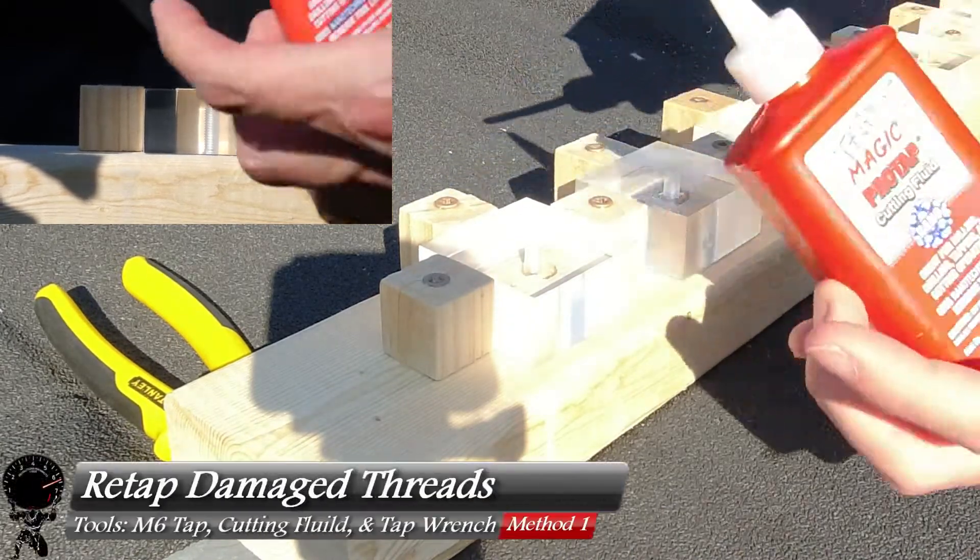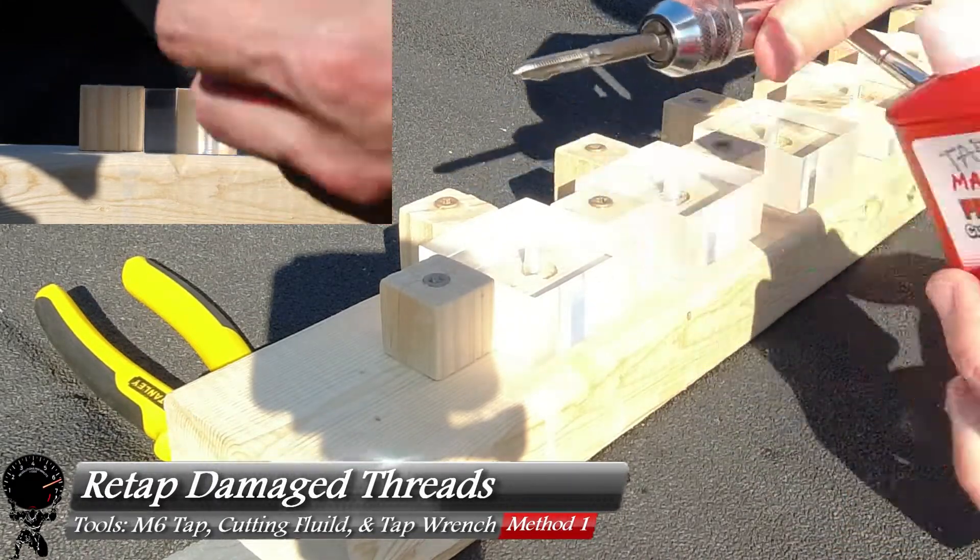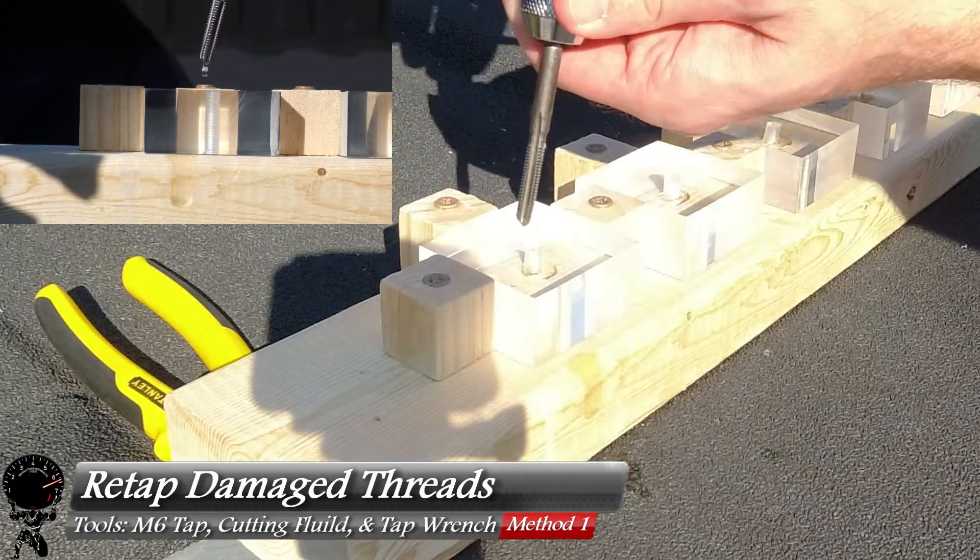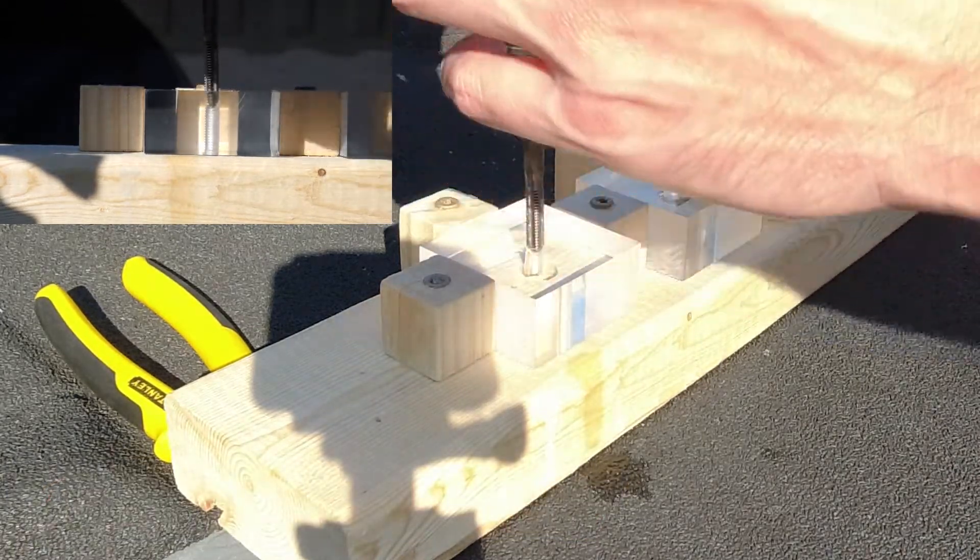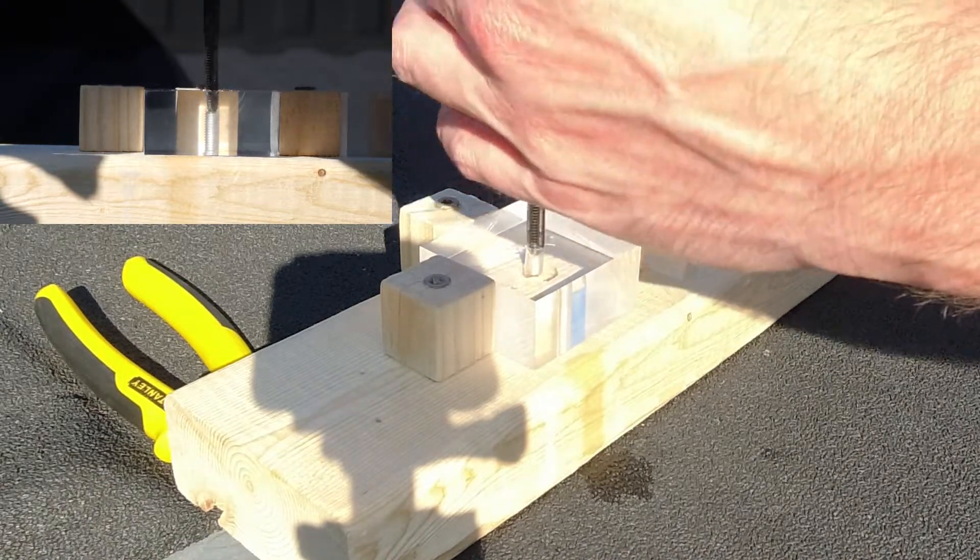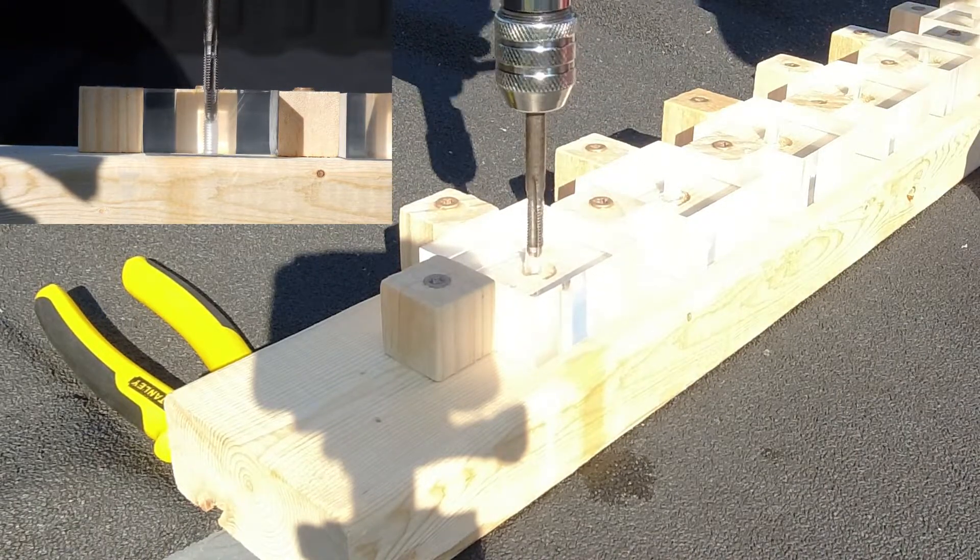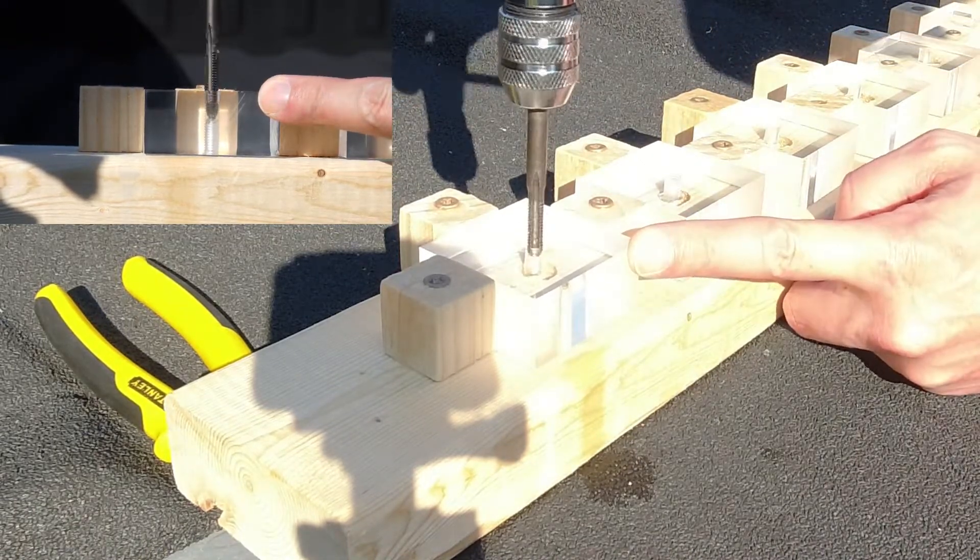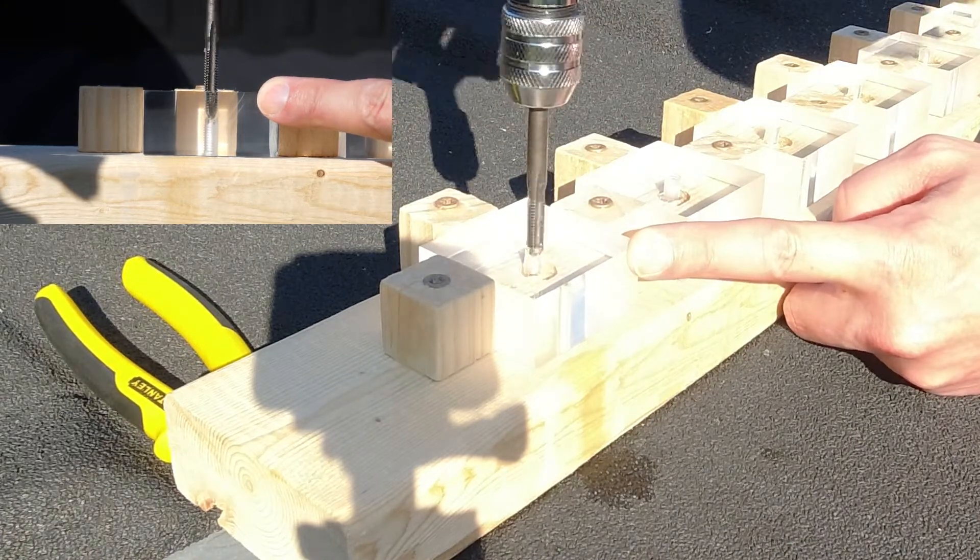We have our M6 tap. I'm going to throw just a little bit of tap magic on there - this is cutting fluid. Throw a little bit on there and we're going to make sure I'm going the right direction. Basically start re-tapping it. As you feel resistance, just pull back. Since this is acrylic, it goes down very quickly, this tap has no problem cutting through it.